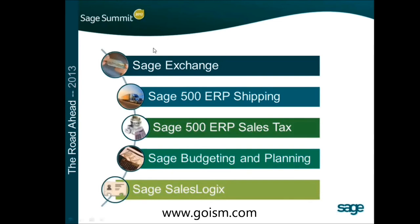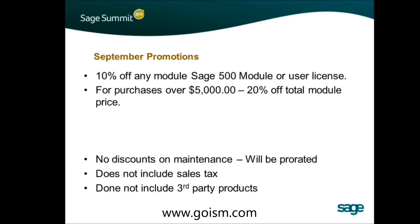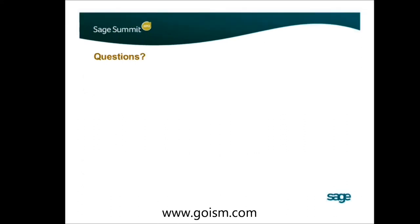Sage also has a module formerly called Active Planner for budgeting and planning — they renamed it Budgeting and Planning, which makes more sense, and significantly reduced the price. For September, ISM has promotions: 10% off any module, and for any purchase over $5,000, 20% off the total price. It does not include maintenance but does include third-party products.